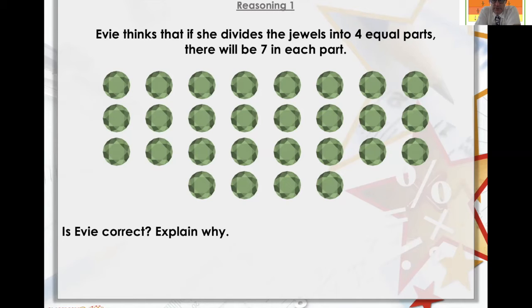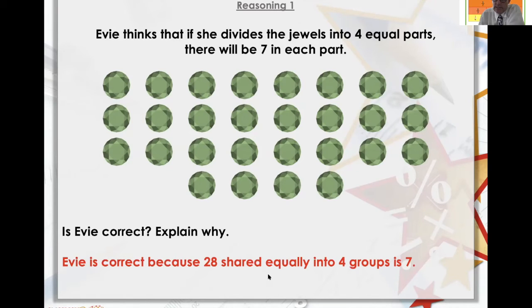Evie thinks if she divides the jewels into four equal parts, there will be seven in each part. So seven times four equals what? Four times seven equals what? Or circle them in groups of seven here. Seven times four equals 28. Yes, she's correct because 28 shared equally into four groups is seven. Seven times four equals 28.